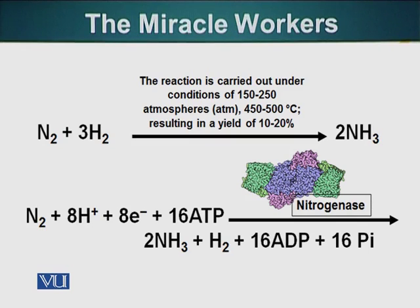Nitrogen fixation. On the top part of the slide, we have a molecule of nitrogen with three molecules of hydrogen resulting in two molecules of ammonia. This is the Haber process, done industrially to produce ammonia. This reaction requires 500 degrees Celsius temperature and a pressure of 150 to 250 atmospheres — a huge amount of pressure, a huge amount of energy required to simply form ammonia from atmospheric nitrogen reacting with hydrogen.